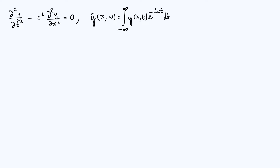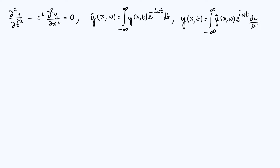So my y-tilde, which is the temporal Fourier transform of y, is just the integral of y times e to the minus i omega t with respect to time over all values of time. Under this convention, the inverse Fourier transform — in other words, to get back to y as a function of x and t — is an integral over all values of omega of y-tilde times e to the i omega t, but then you've got to divide by 2 pi as well.